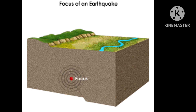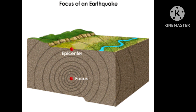An earthquake is what happens when two blocks of the earth suddenly slip past one another. The surface where they slip is called the fault or fault plane. The location below the earth's surface where the earthquake starts is called the focus, and the location directly above on the surface of the earth is called the epicenter.